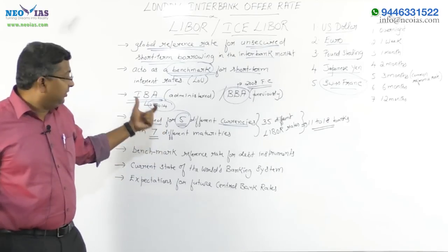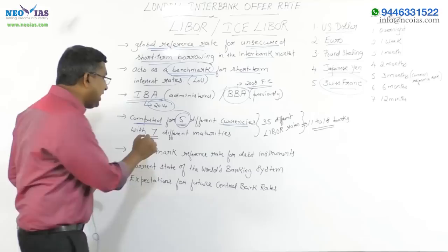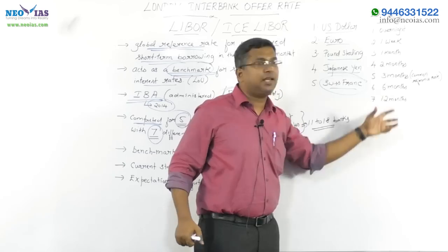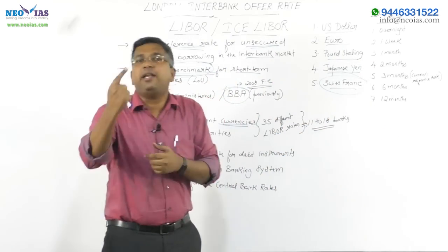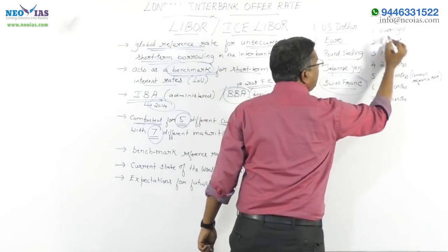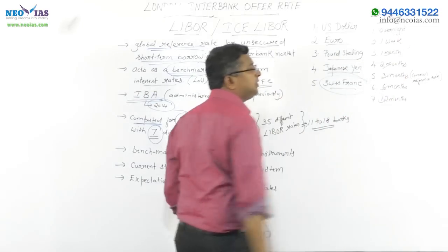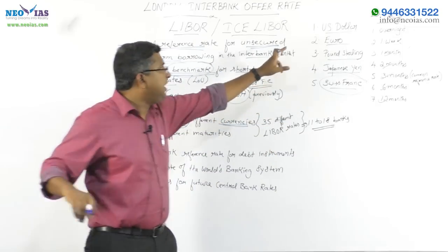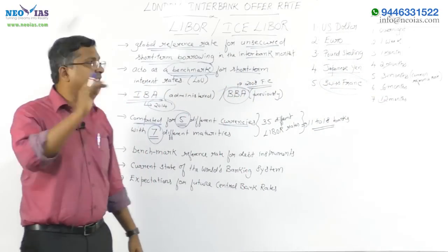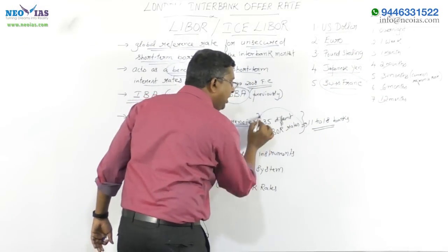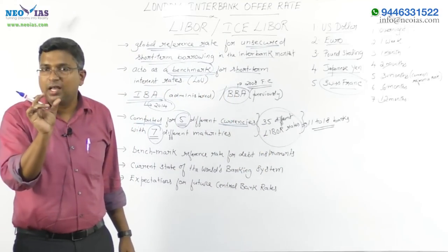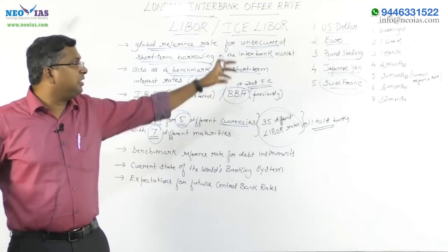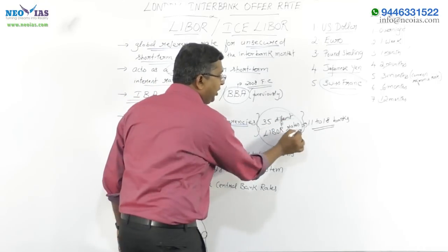This interest rate is computed for 5 different currencies across 7 different maturities. The 7 maturities are: overnight (one day), 1 week, 1 month, 2 months, 3 months, 6 months, and 12 months. So for each of the 5 currencies there are 7 rates, giving a total of 35 rates — meaning LIBOR offers 35 different interest rates in a business day.